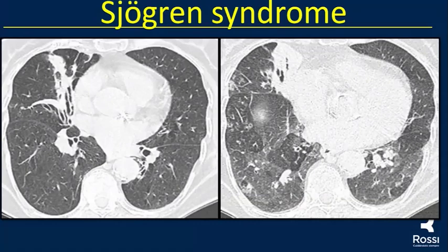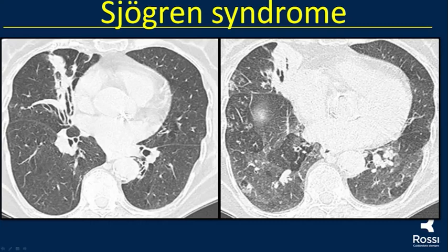In patients with Sjogren's, we can also see bronchial disease. We see bronchiectasis in the middle lung with some distortion and traction bronchiectasis. The expiratory CT shows normal lung and small areas of air trapping. We can also see airway bronchial thickening in both lungs.